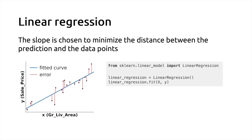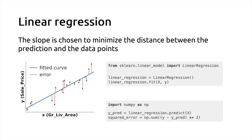The goal is to minimize the difference between the blue curve — the prediction function parameterized by those coefficients — and the expected value at each location in the training set. The red bars represent the error, or the difference, between the prediction in blue and the observed value in the training set. This quantity is called the squared error, and scikit-learn minimizes it to tune the model's coefficients.